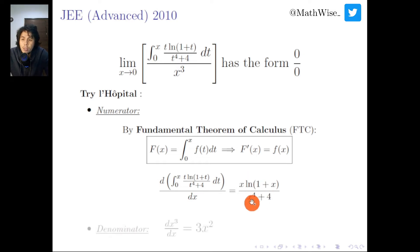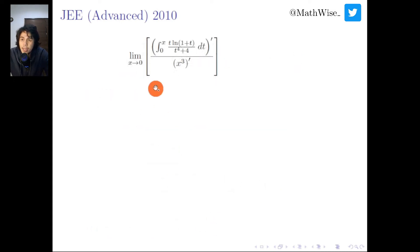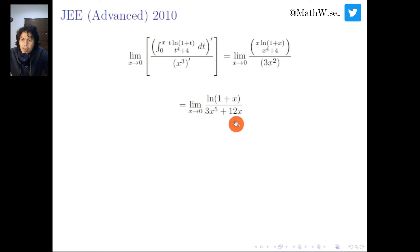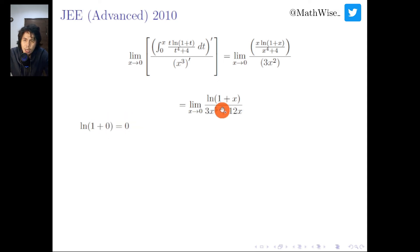The derivative of the denominator x cubed is just 3x squared. Now let us evaluate the limit as x approaches 0 of the ratio of these derivatives. Simplifying, we get ln(1+x) over 3x to the power of 5 plus 12x. Plugging in x equals 0, ln(1+0) equals 0 and the denominator is also 0, so we have the 0 over 0 form again.